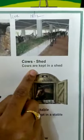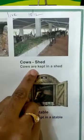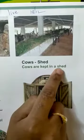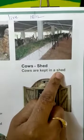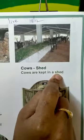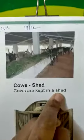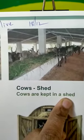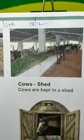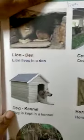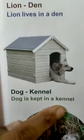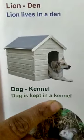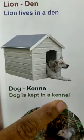Where does a cow live, children? Cows and buffaloes are kept in a shed. Dog. Dog is kept in a kennel.